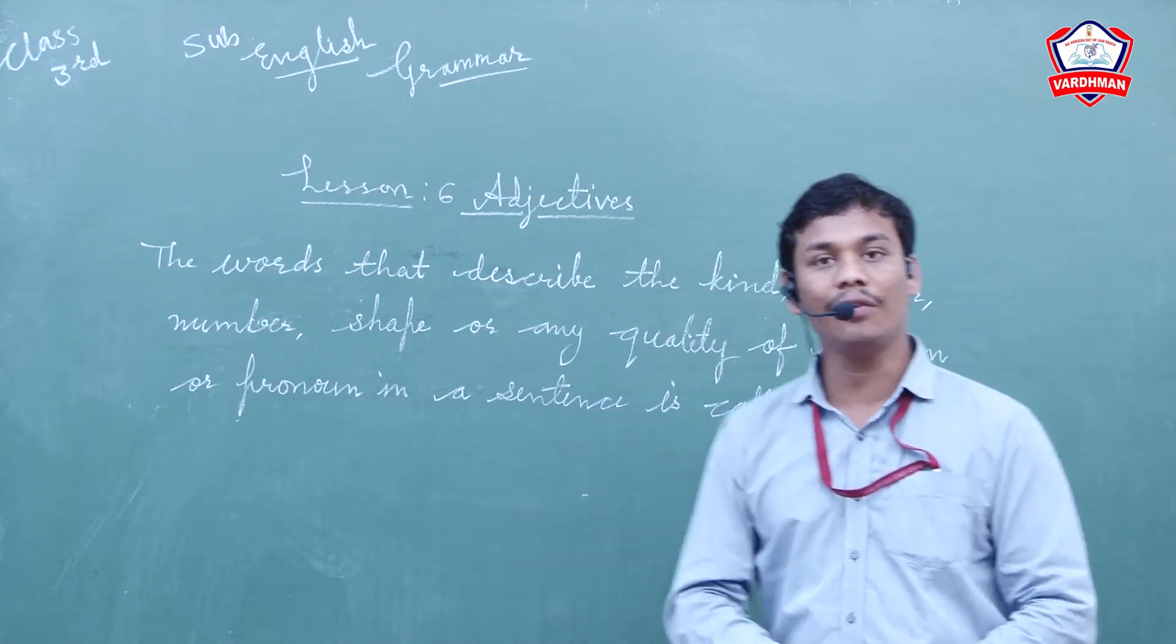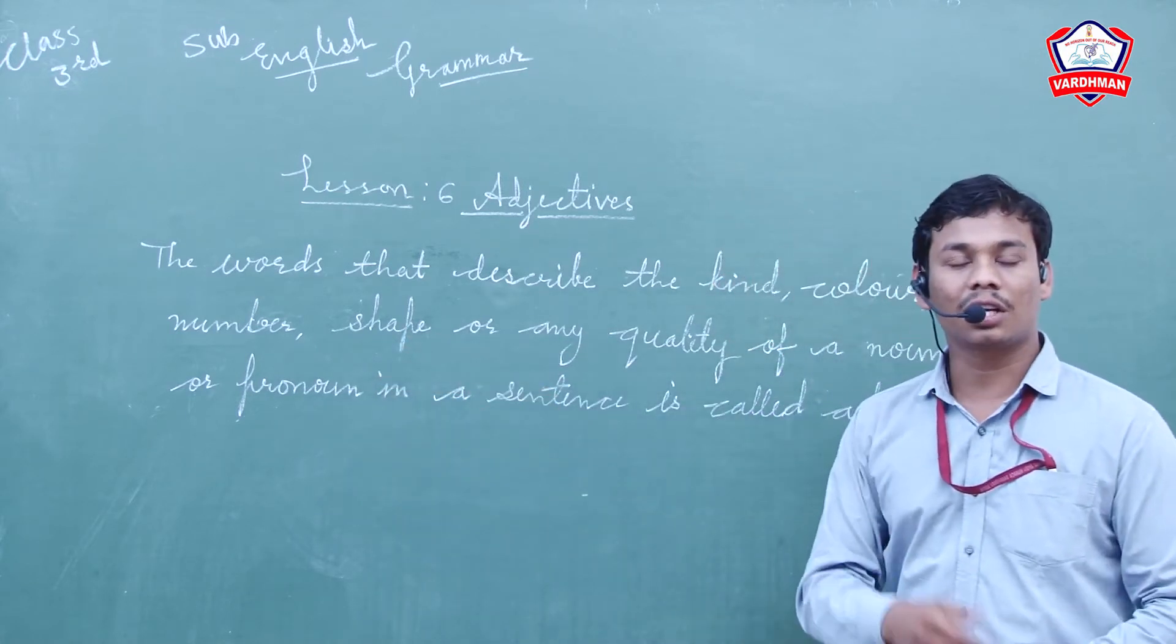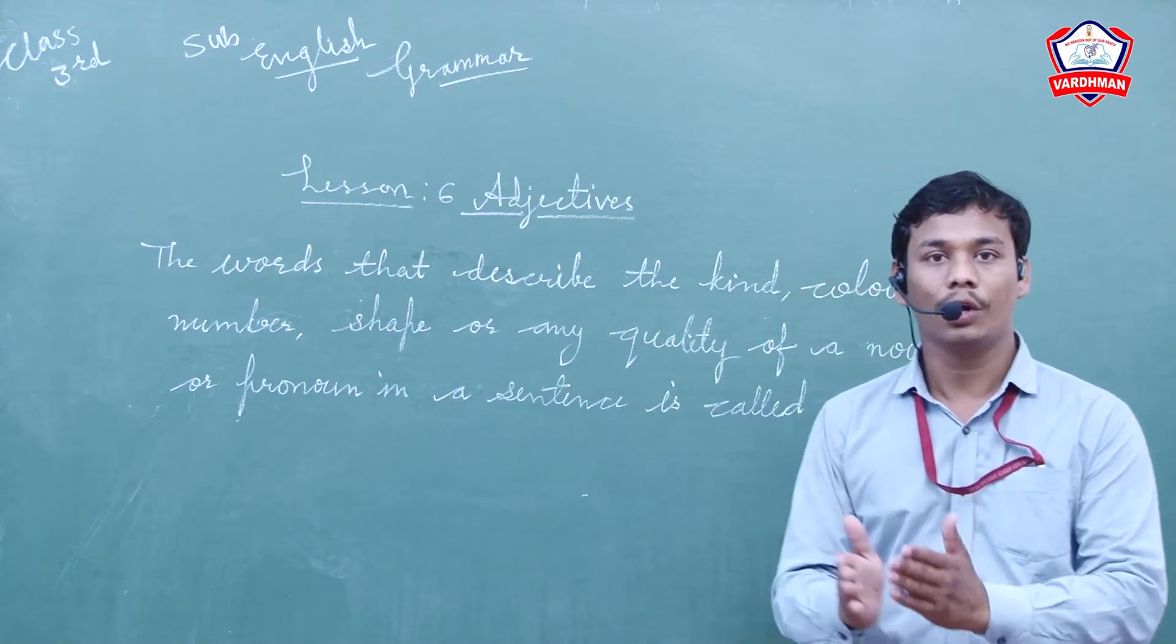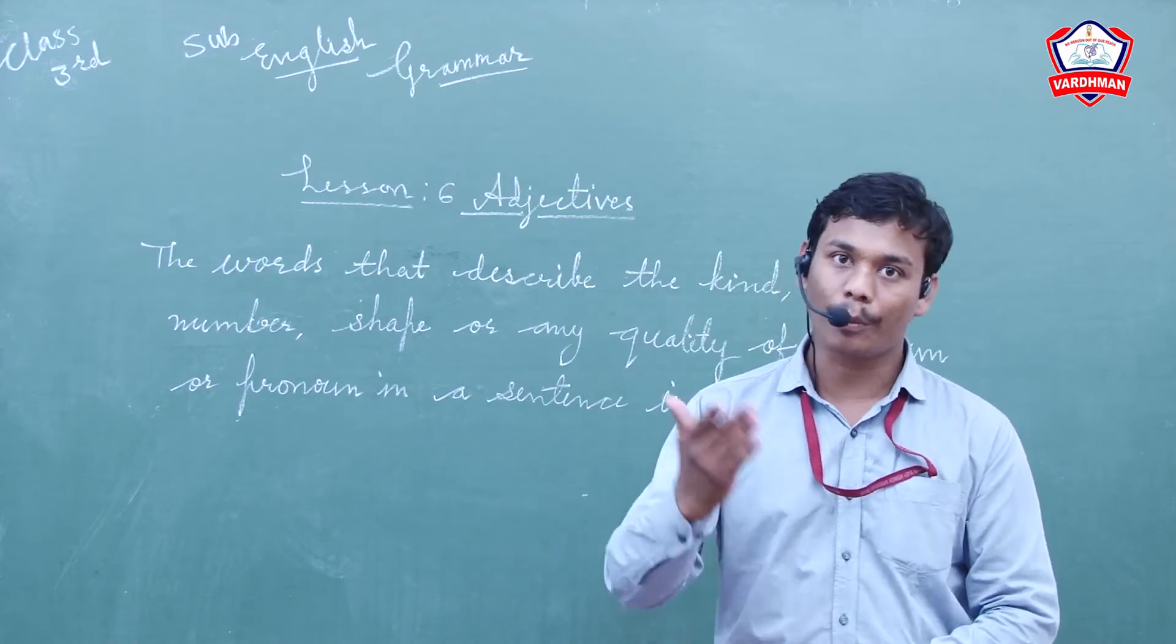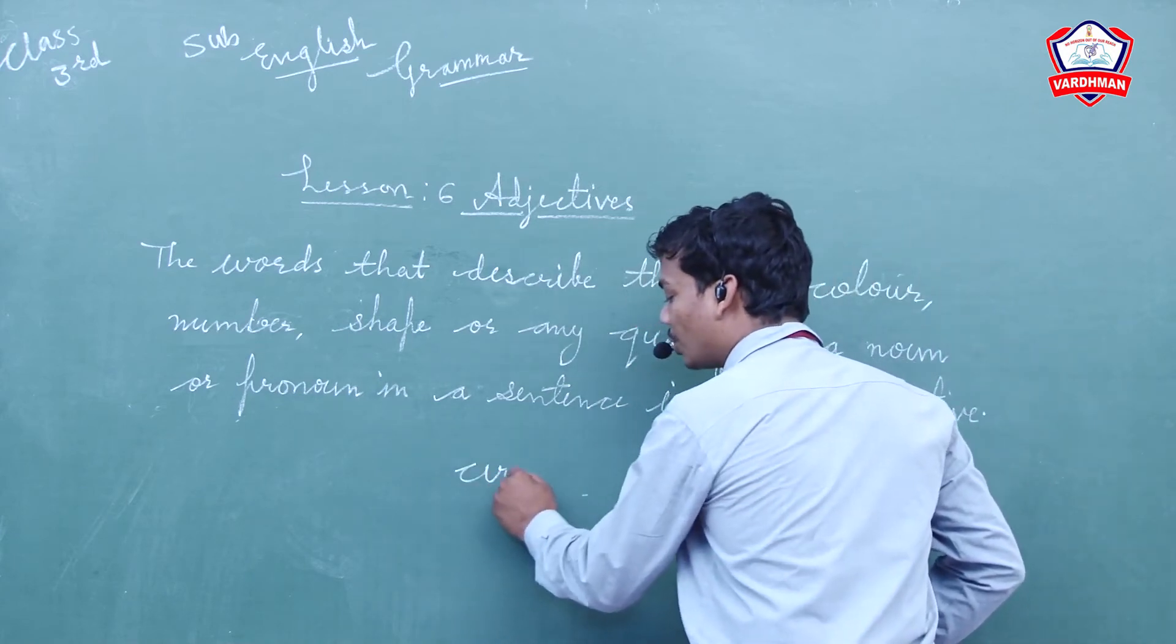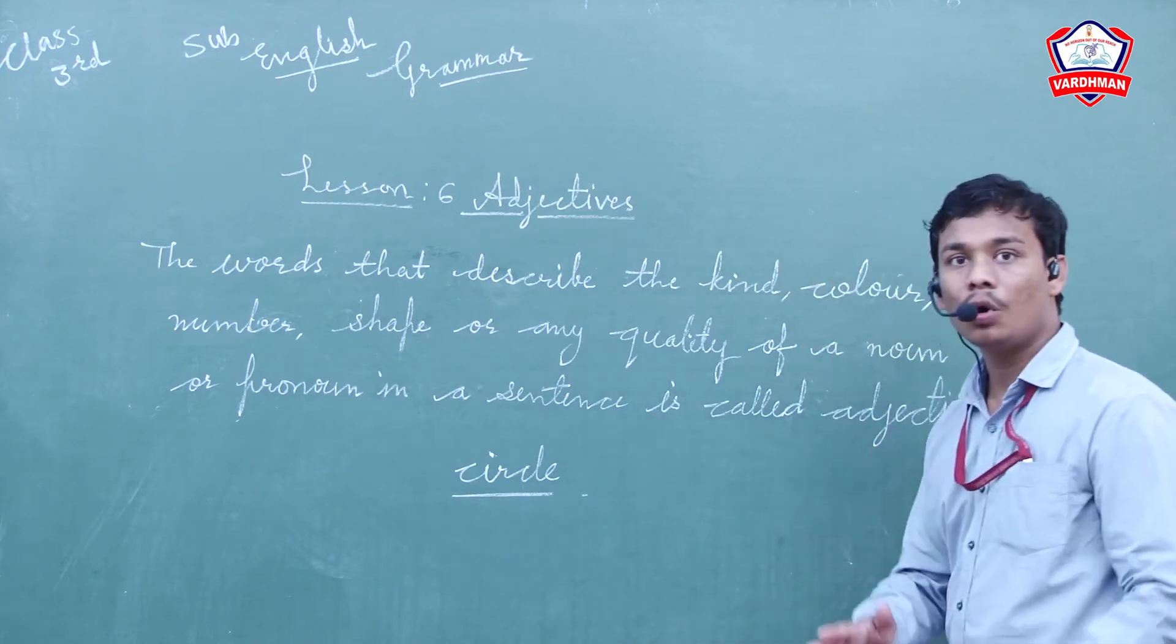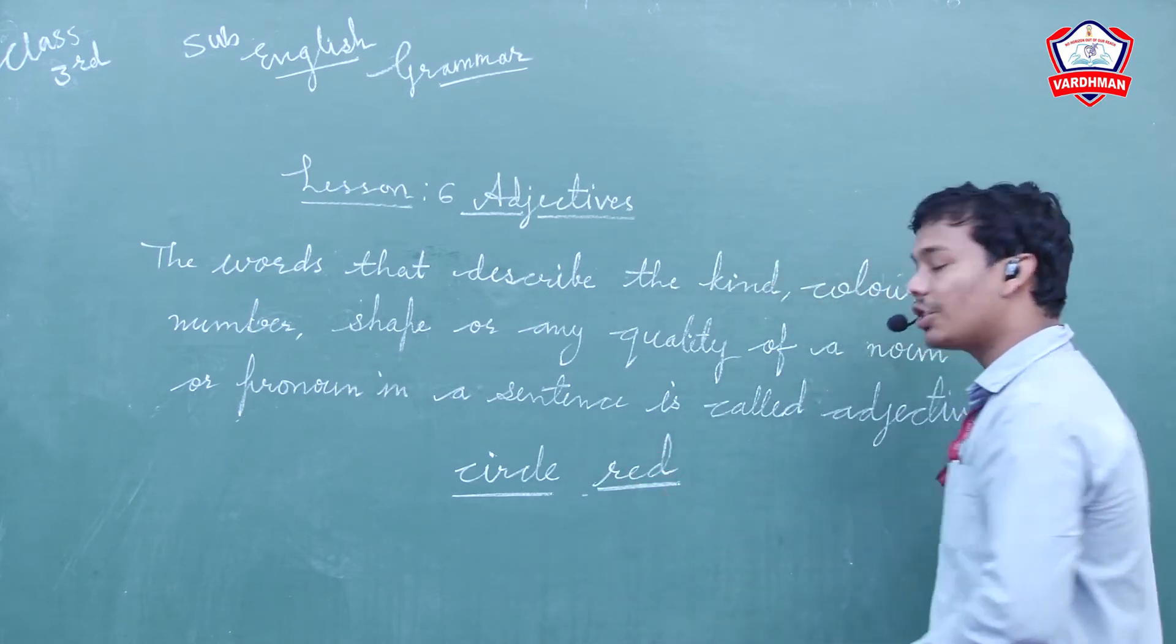These numbers describe the quantity of the noun, how many there are. So that is also an adjective. Shape - rectangular, circular shape - these describe the object. Whatever the object is, it will be a noun. So words that describe nouns or pronouns are adjectives.